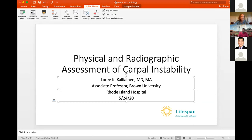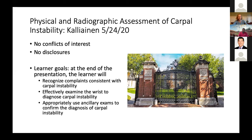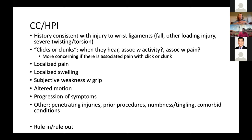At the end of this presentation, you will hopefully be able to recognize complaints consistent with carpal instability, effectively examine the wrist, and use ancillary exams appropriately to confirm your diagnosis. Patients who come with carpal instability will frequently present with a history of fairly large trauma — a fall, other loading injury, holding on to a steering wheel in a motor vehicle accident, or some sort of twisting or torsion injury. They may report clicks and clunks, and it's important to ask when they get them — whether associated with activity or pain.